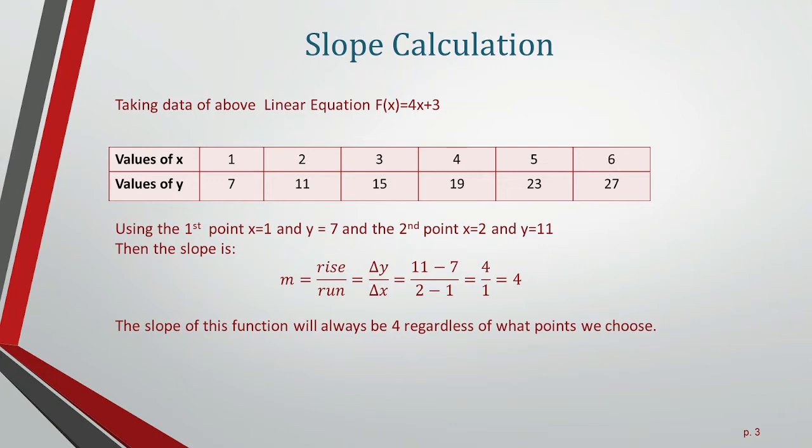Taking the first point x₁ = 1, y₁ = 7 and the second point x₂ = 2, y₂ = 11. Putting these into the slope formula: m = (11 - 7)/(2 - 1) = 4.